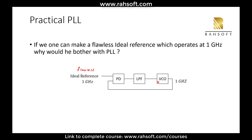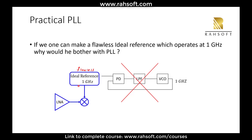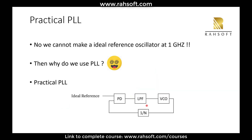If we can make a flawless ideal reference which operates at 1 GHz, then why do we need this whole PLL? If it works perfectly, I would just get rid of the PLL and directly connect it to my mixer. If this is my receiver, why do I need all of this? That's the problem — we cannot make an ideal reference oscillator at 1 GHz.